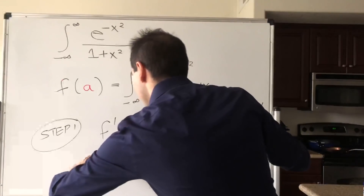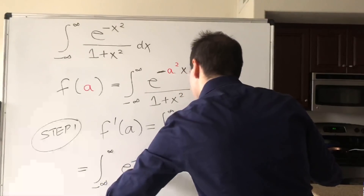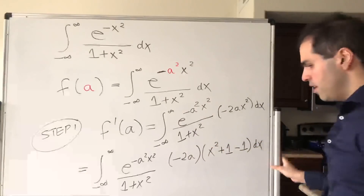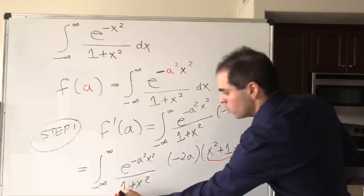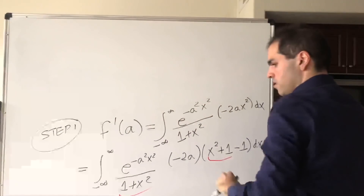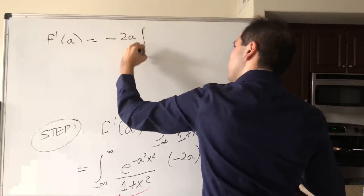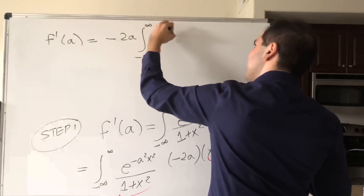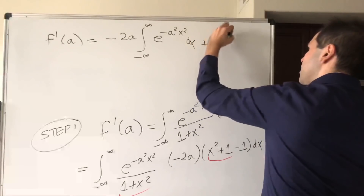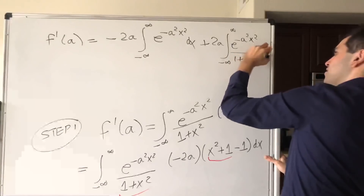So we get the integral from minus infinity to infinity of e^(-a²x²) / (1 + x²) times minus 2a times (x² + 1 − 1) dx. What's nice is that the x² + 1 cancels with the 1 + x² in the denominator. So we get f'(a) equals minus 2a times the integral from minus infinity to infinity of e^(-a²x²) dx, plus 2a times the integral from minus infinity to infinity of e^(-a²x²) / (1 + x²) dx.